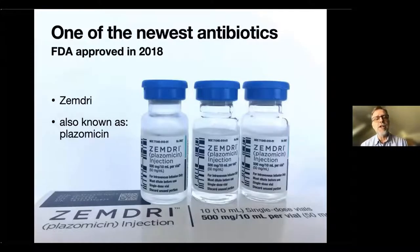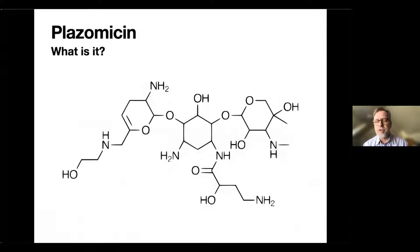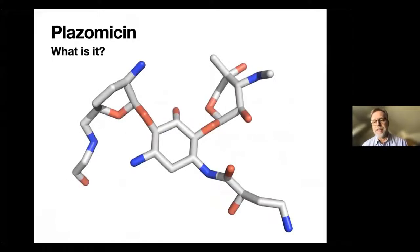So I'm very happy for this invitation. I'd like to talk to you about antibiotic resistance. Specifically, I would like to talk to you about this newest and last, one of the last antibiotics just coming on the market. It's only three and a half years old. It's called Zemdry, and scientists generally call it plazomicin. So what is this drug? This is its chemical structure, but in my lab, we think about things in three dimensions, and this is how we think of Zemdry. It's the three-dimensional structure of this drug.